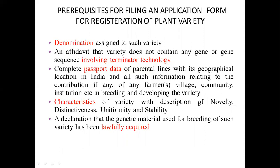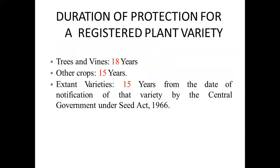Fourth, the variety must demonstrate Novelty and meet DUS — Distinctiveness, Uniformity, and Stability. Finally, you must declare that all material used was lawfully acquired. Regarding protection duration: for trees or vines, protection is granted for 18 years; for other crops, 15 years; for extant varieties — those already notified under the Seed Act — protection is also 15 years.